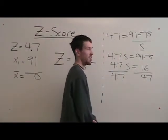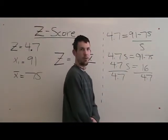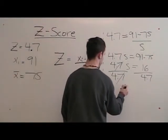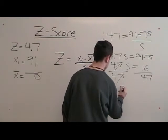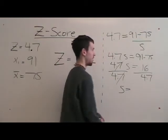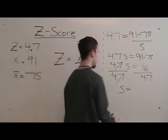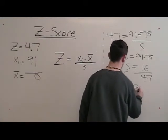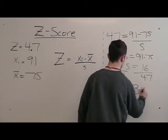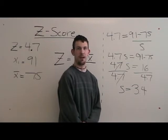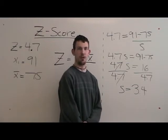4.7 divided by 4.7 cancel each other, which leaves s. 16 divided by 4.7 is 3.4. That is how you find the standard deviation using the z-score formula.